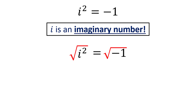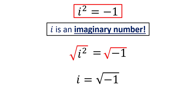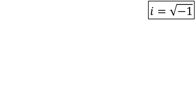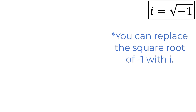Usually you see i expressed as the positive square root of negative 1, although technically the definition of i comes from i squared equaling negative 1. Since i is equal to the square root of negative 1, if you ever have the square root of a negative number in your problem, you can replace it with i.